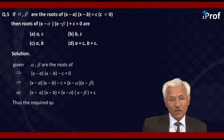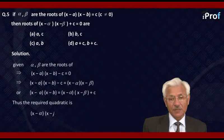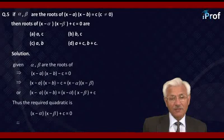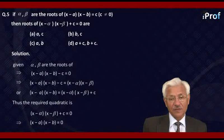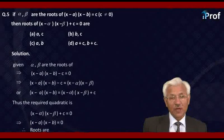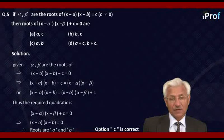Thus the quadratic equation (x - α)(x - β) + c = 0 can be replaced by (x - a)(x - b) = 0, which gives the roots as x = a and x = b. Hence the roots are a and b. Option C is correct.